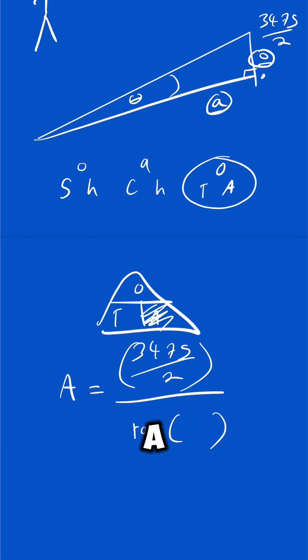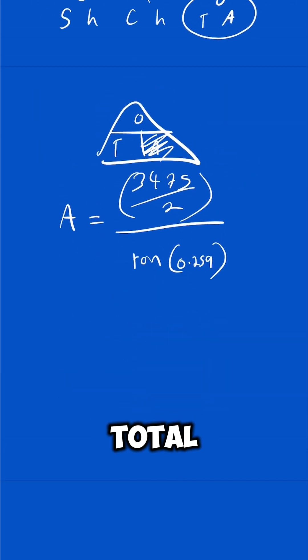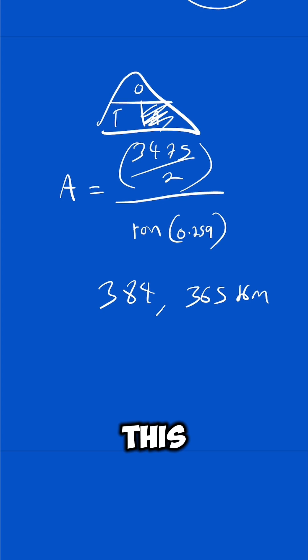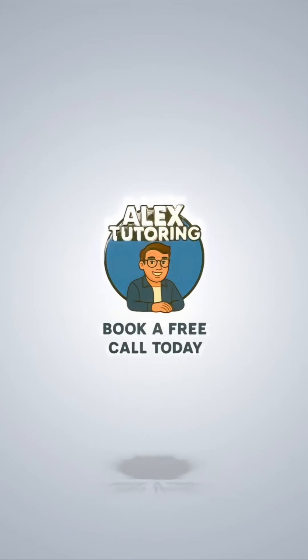And if we put this on our calculator, that's going to be 3475 over 2, tan of the angle 259, and that's going to give us a total of 384,365. And initially the diameter was in kilometers, so therefore this is also in kilometers. That's how far away the moon is from a pure estimate.